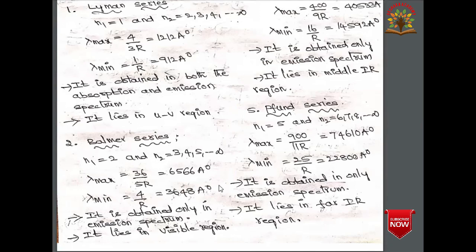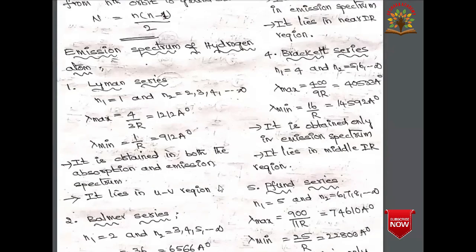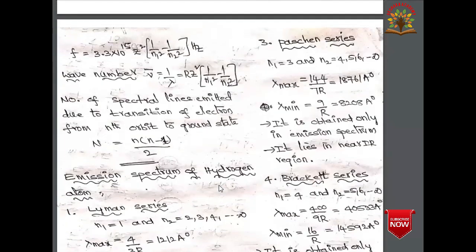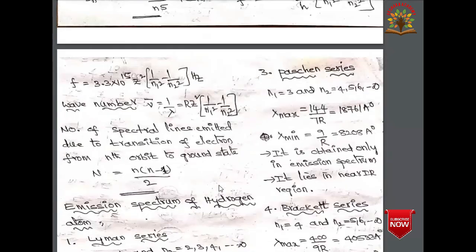The Balmer series is obtained when n₁ = 2 and n₂ = 3, 4, 5, ... ∞. The maximum wavelength is 36/(5R) = 6566 Å and the minimum wavelength is 4/R = 3648 Å. It is obtained only in the emission spectrum and lies in the visible region of the electromagnetic spectrum.